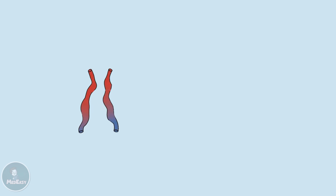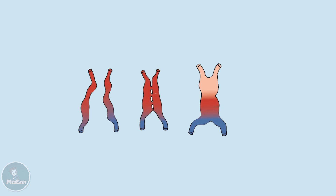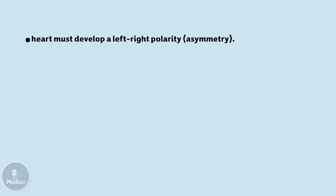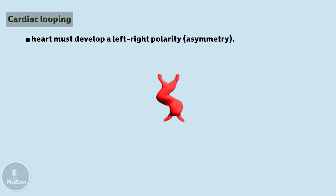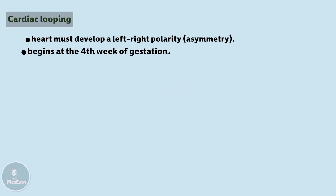After the two endocardial tubes have fused together and formed the primary heart tube, which is still bilaterally symmetrical, it must develop a left-right polarity, which will occur by a process known as cardiac looping, which also begins at the fourth week of development.